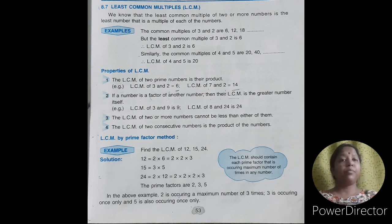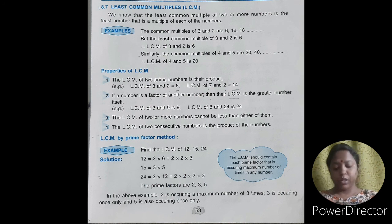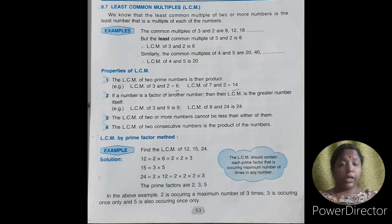LCM can be performed by 2 methods: number 1, prime factor method; number 2, common division method. First we will discuss prime factor method with the help of an example. Find the LCM of 12, 15 and 24. First we have to find out the prime factor representation of the given numbers. The prime factor representation of 12 is 2 × 2 × 3. The prime factor representation of 15 is 3 × 5. The prime factor representation of 24 is 2 × 2 × 2 × 3.